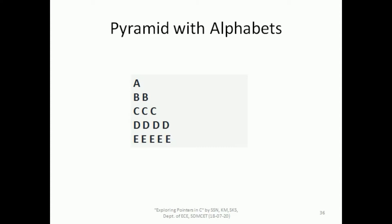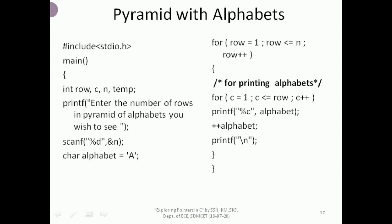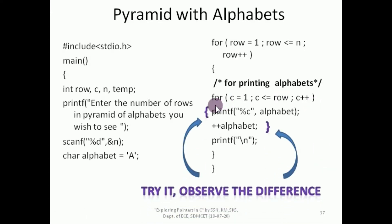When printing alphabets, the characters change according to their rows, so you need to define a character variable initialized to 'a'. When you increment it, its ASCII code gets incremented and in place of 'a', 'b' gets printed in the next row. We also saw what happens if we cover these statements inside a for loop or simply replace the alphabet variable with alphabet++.